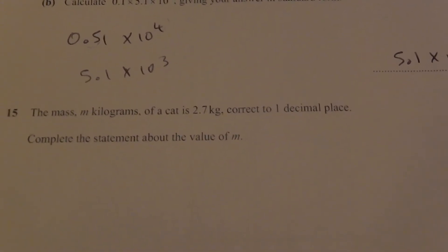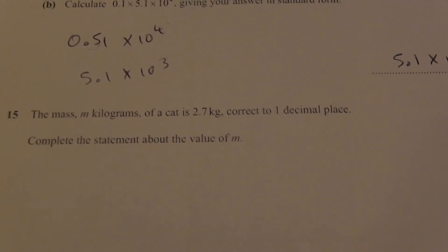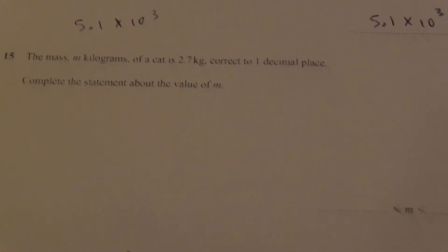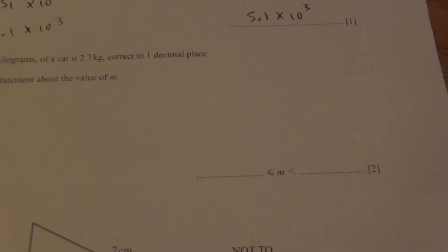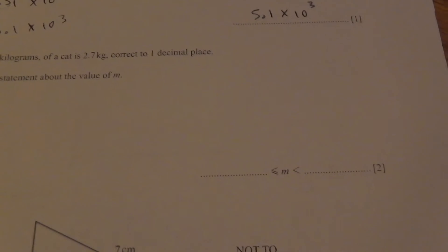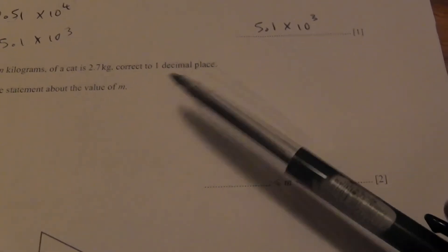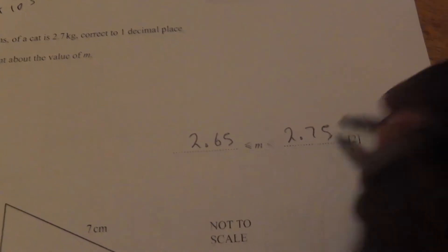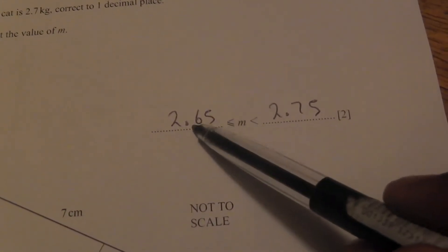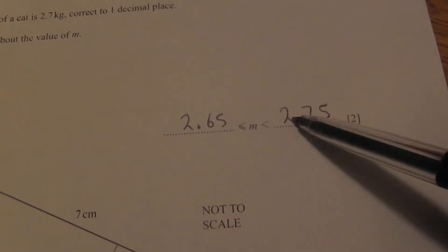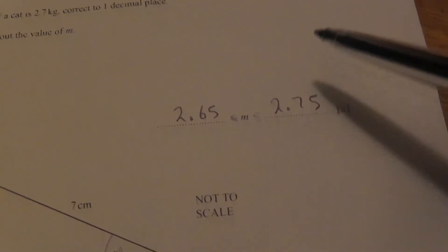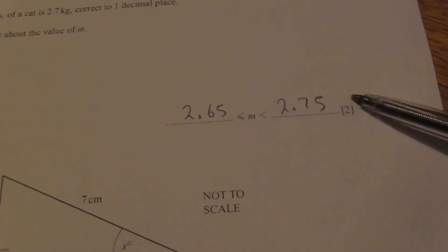The mass m kilograms of a cage is 2.7 kg correct to one decimal place. Complete the statement about the bounds of m. The lower bound is the lowest number that rounds to 2.7, which is 2.65. The upper bound is 2.75. For example, 2.74 rounded to one decimal place gives 2.7, which is why the upper bound is 2.75.